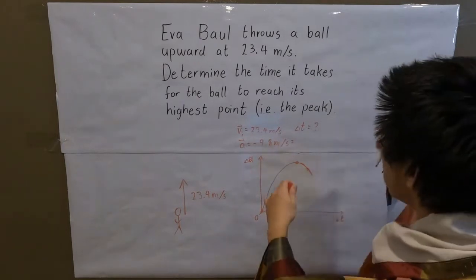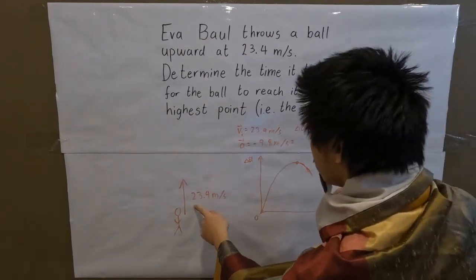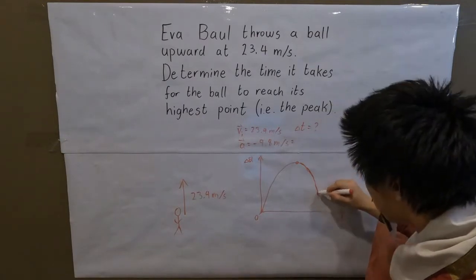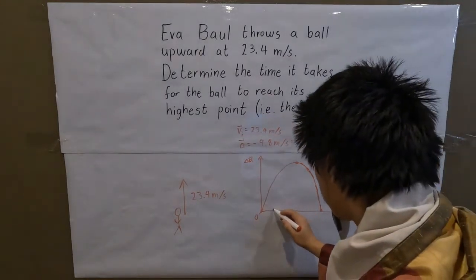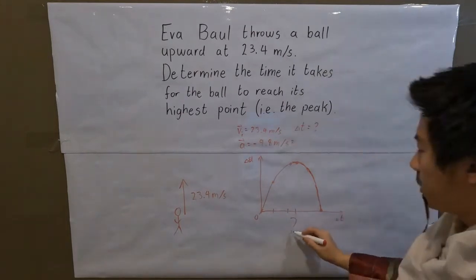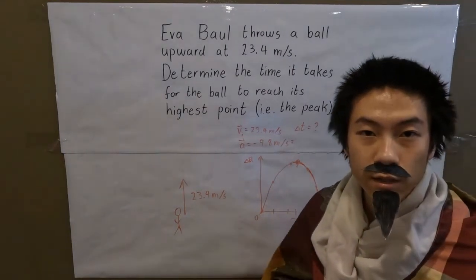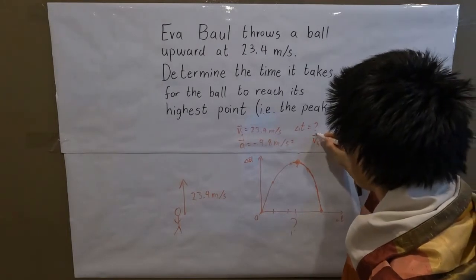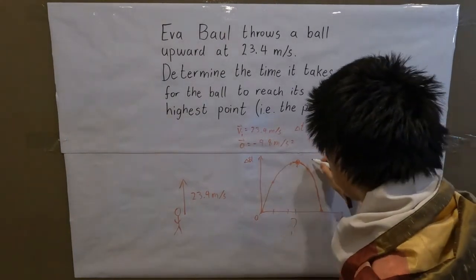Then the ball starts falling down because acceleration is still negative — gravity is still pulling it down. At some point gravity overcomes the initial velocity, the velocity becomes negative, and the ball falls down towards the ground. At the peak — we don't know at exactly what time — the velocity is exactly zero meters per second.